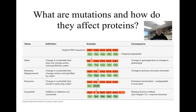A missense mutation occurs when a single nucleotide changes, producing a codon that codes for a different amino acid than the one coded for by the previous codon. Depending on what the change is, this type of mutation could have far-reaching effects, but doesn't necessarily have to if the substituted amino acid has characteristics similar to the original, or if it is in a non-essential part of the protein.